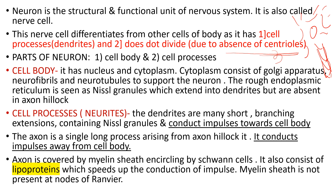The cytoplasm consists of Golgi apparatus, neurofibrils, and neurotubules to support the neuron. The rough endoplasmic reticulum is seen as Nissl granules — this is a very important term. Nissl granules extend into the dendrites but are absent in the axon hillock. The dendrites are many short branching extensions containing Nissl granules that conduct impulses towards the cell body.